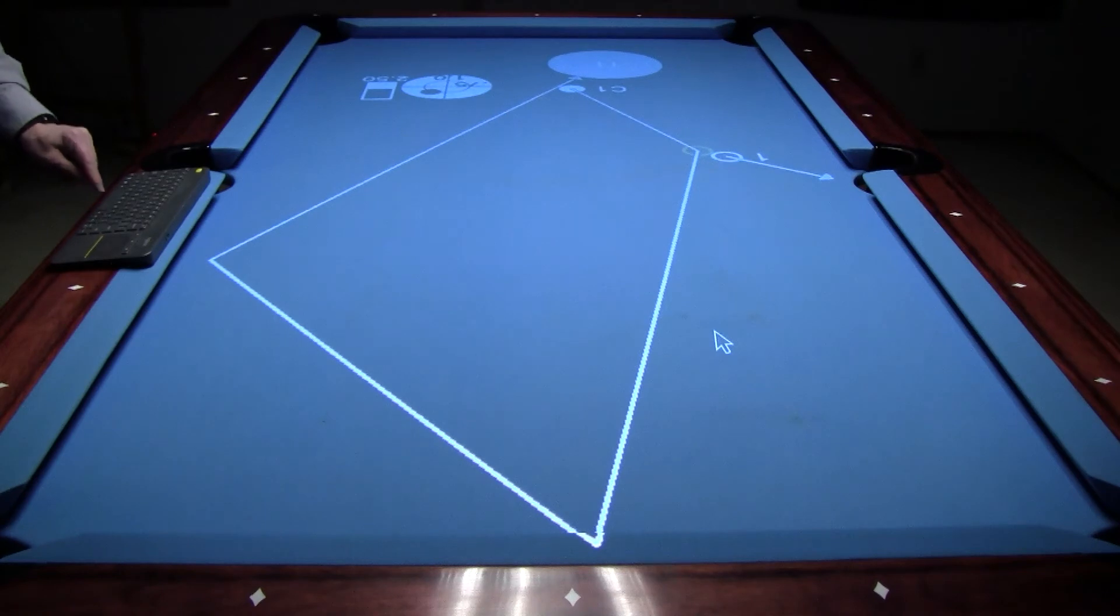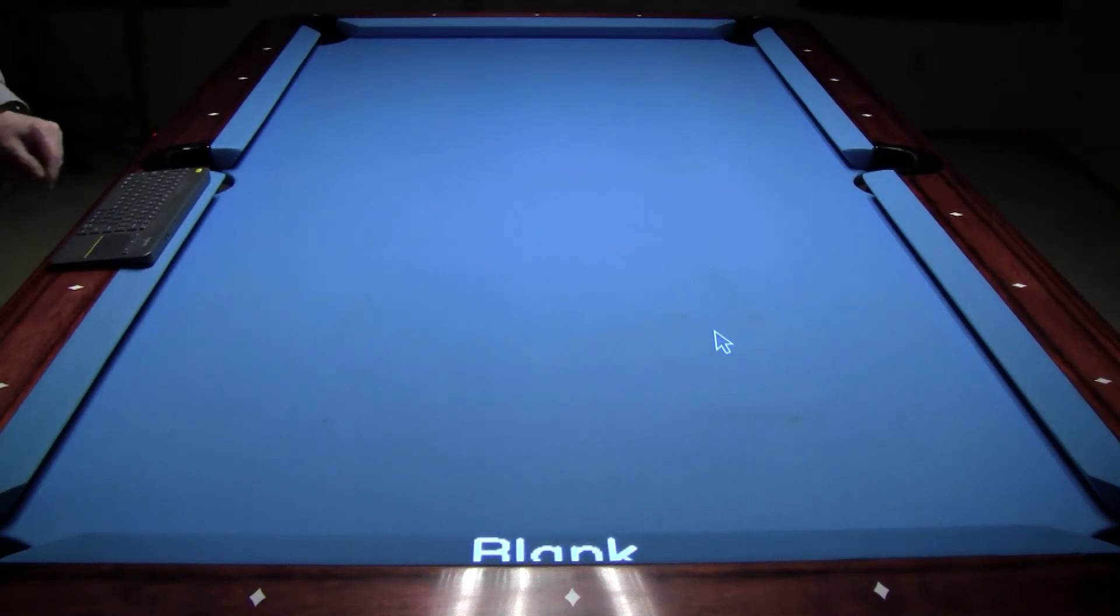You can also blank the layout from view by pressing the B key. Just press it again to return to the layout.